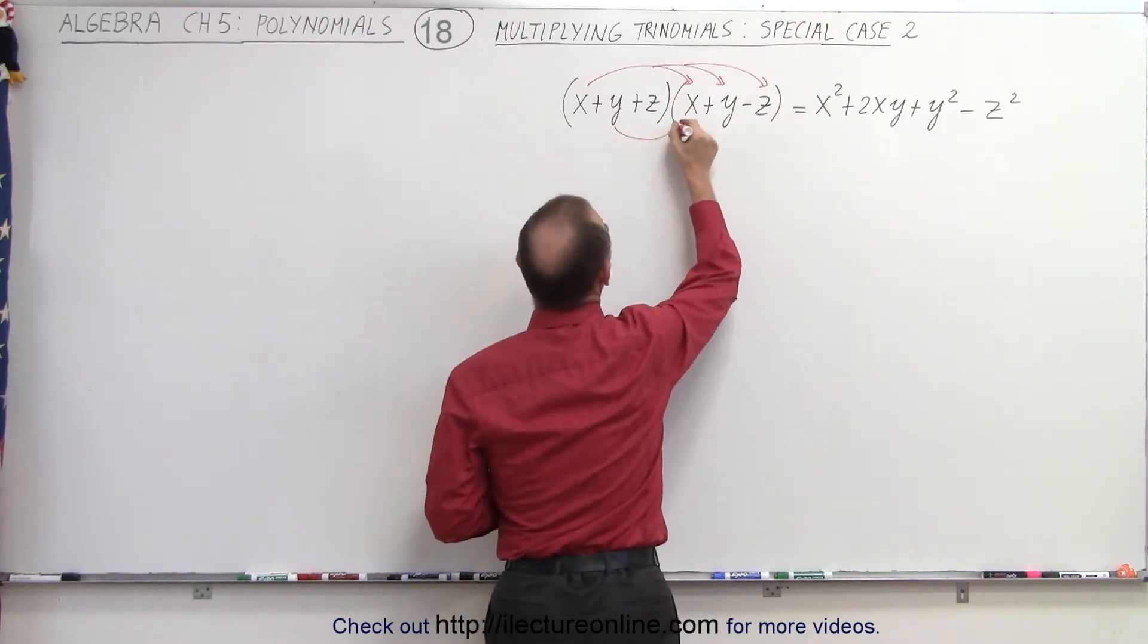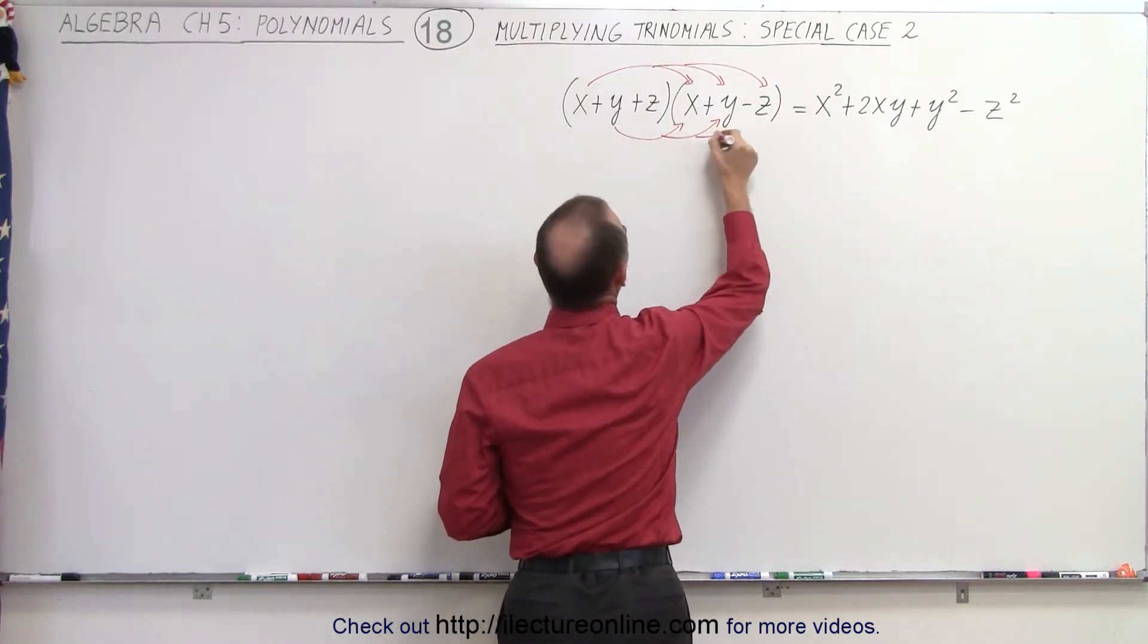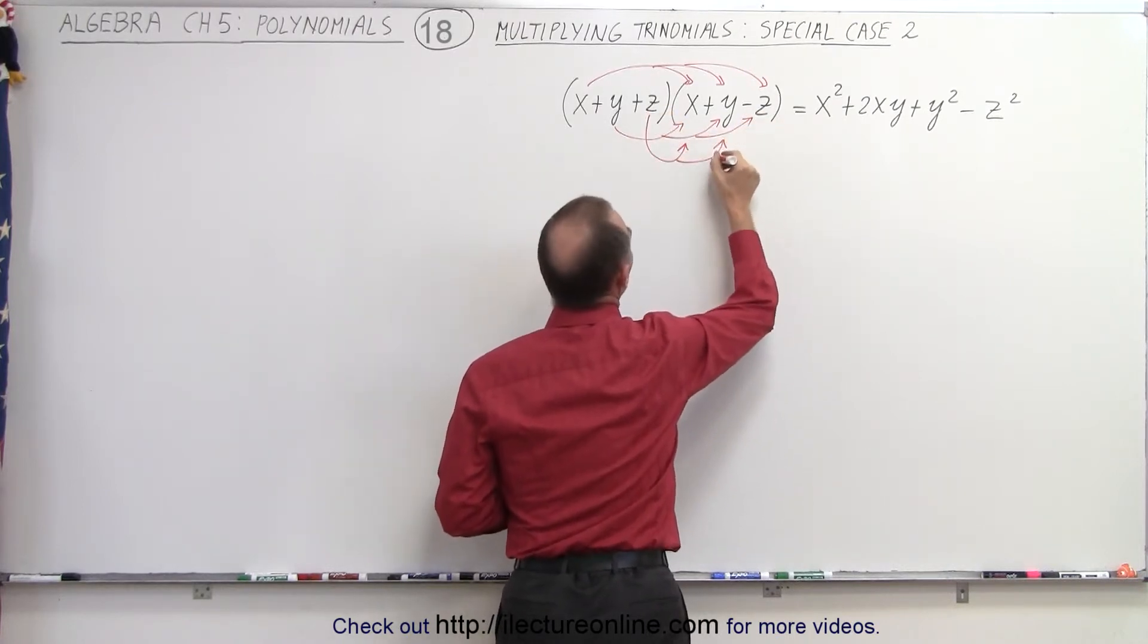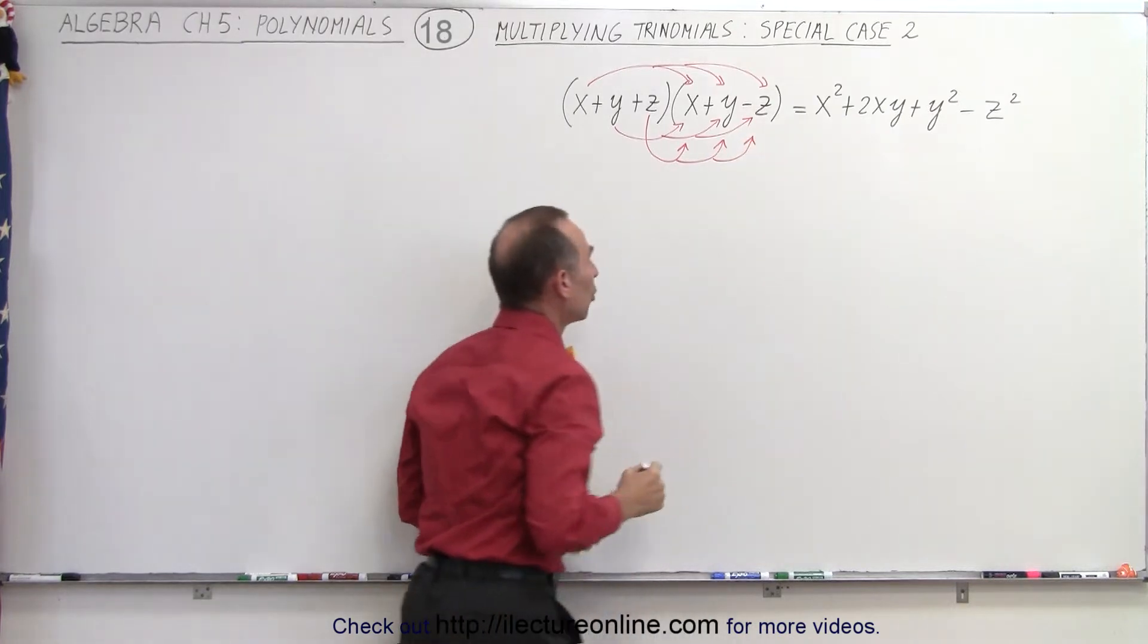We take the second term, and again we do the same, multiply it times each of the terms in the second trinomial, and the third term, multiply it times each of the terms in the second trinomial.